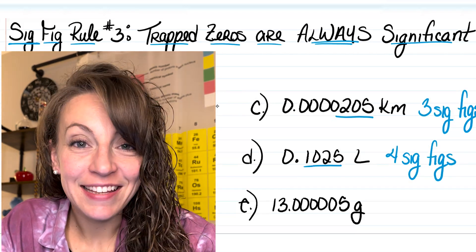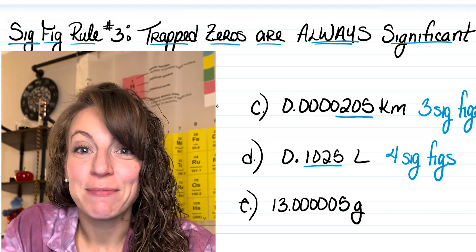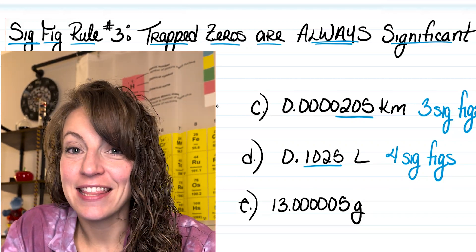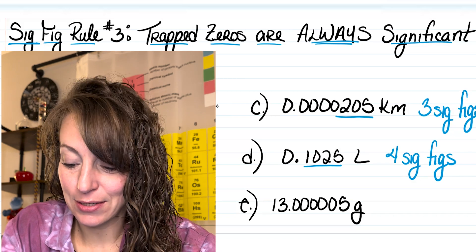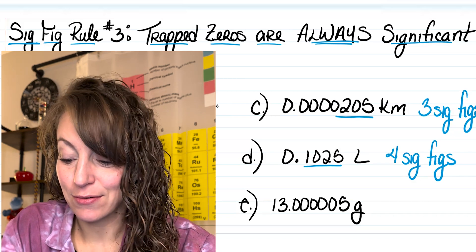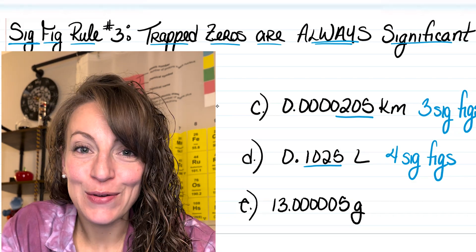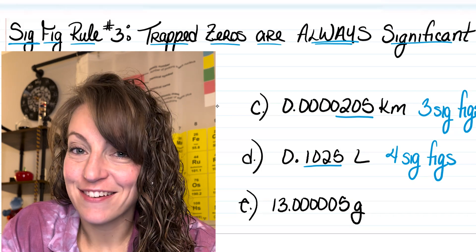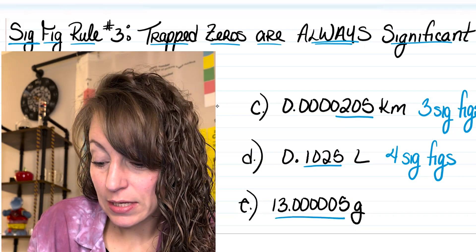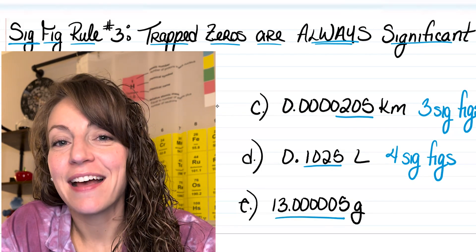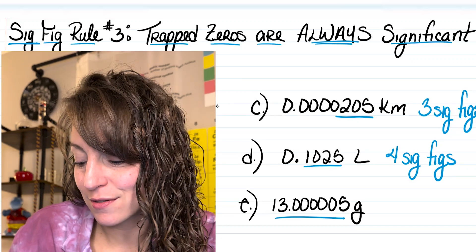And finally in letter E I have five trapped zeros in the measurement 13.0000005 grams. All those trapped zeros are significant, so in this particular measurement I have a total of eight significant figures.